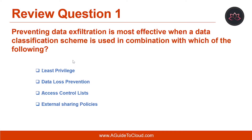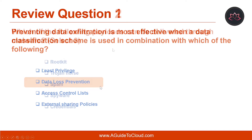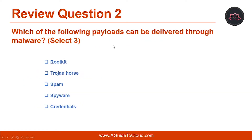Let's look at the first question: preventing data exfiltration is most effective when a data classification scheme is used in combination with which of the following? The correct answer is data loss prevention.